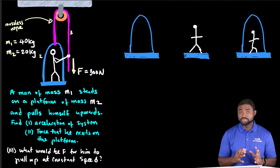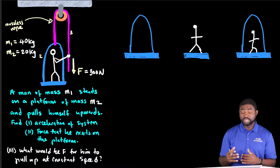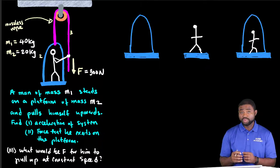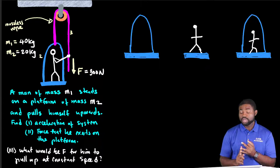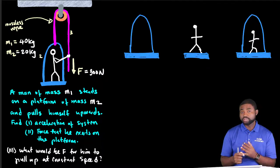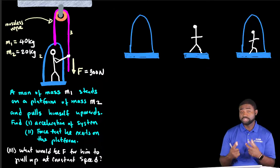In order to do this problem, which students often find very difficult, we just need to draw the right free body diagram. I'm going to draw the free body diagram for the platform only, for the man only, and for the man and the platform together as a combined system.